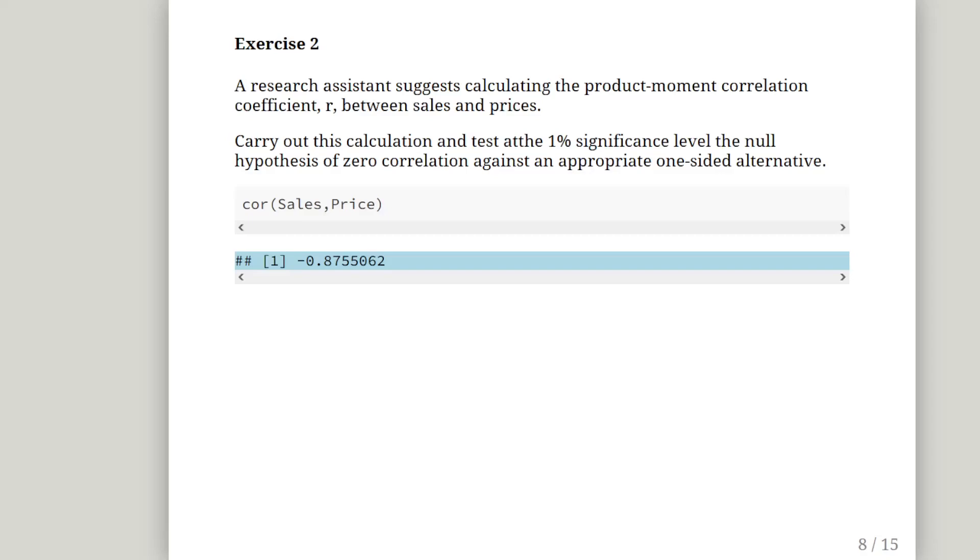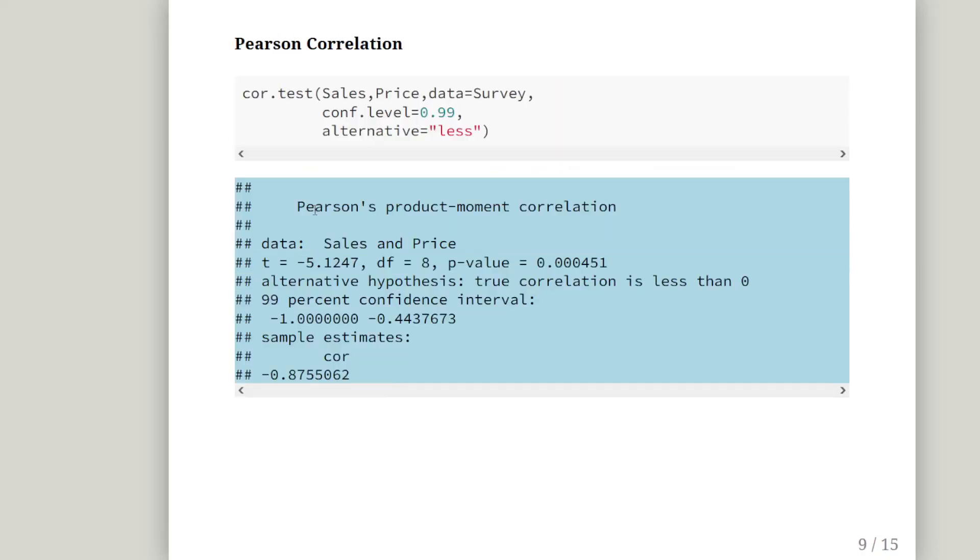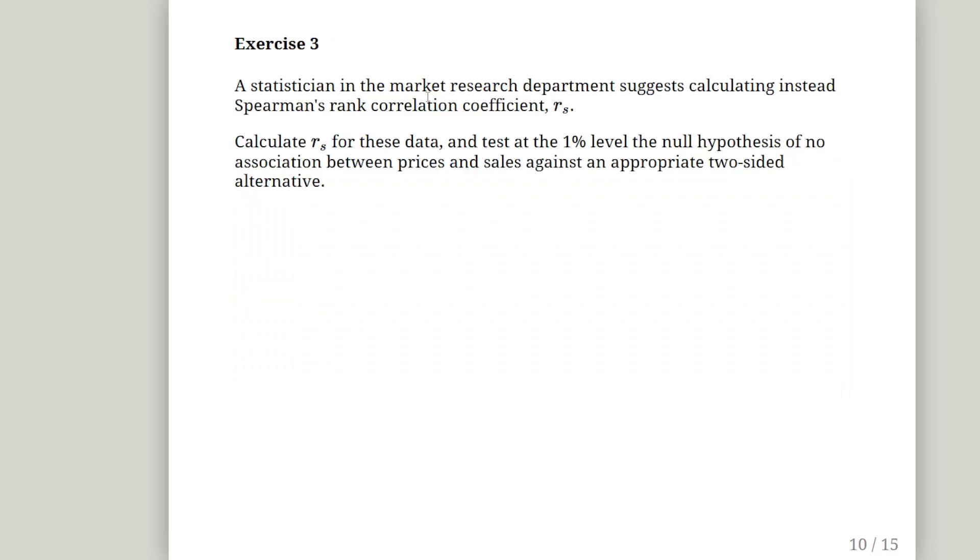So that's the correlation coefficient there, COR. By default, that's the Pearson correlation, sales and price. We could actually mention the data it's from as well. Minus 0.8755062. Just actually, sales and price actually are both in memory separately from the data set, but you could actually just mention, if required, data equals survey, just to, that's just probably good practice. I really should have it in there.